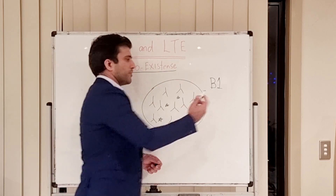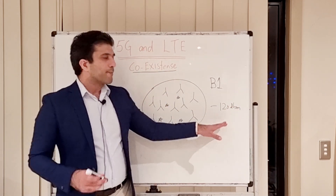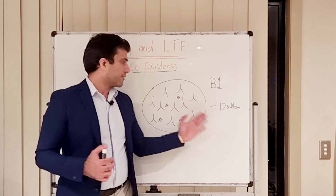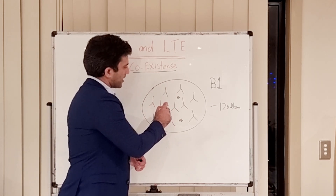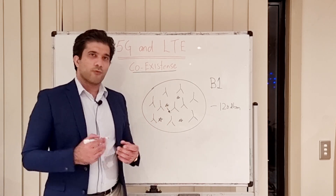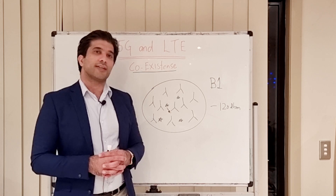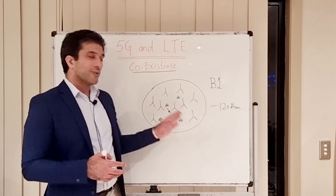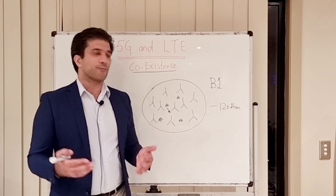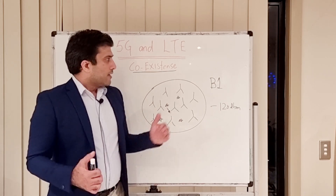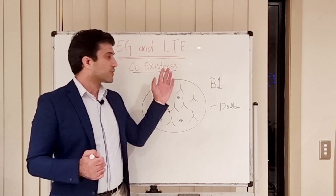For example, if you have set your B1 to -120 dBm — speaking theoretically — once your UE is in the area and sees coverage from the NR cell at around -120 dBm, it will trigger this B1 event. Once triggered, secondary node addition for the 5G cell will start in the case of NSA, and in the case of SA it will start a redirect procedure from LTE to NR.